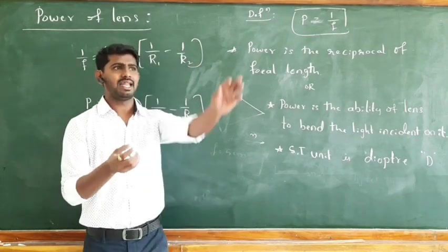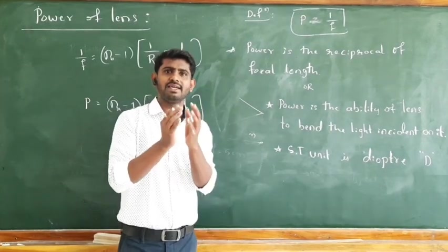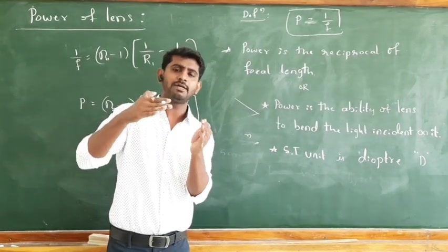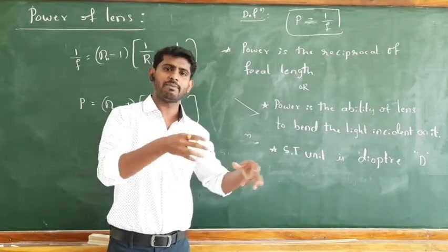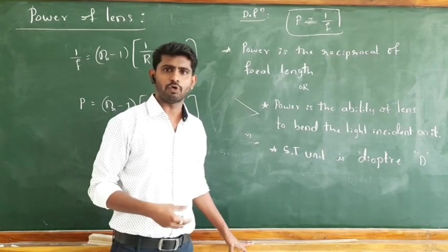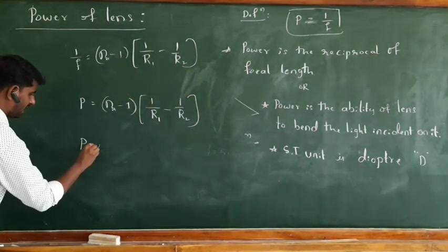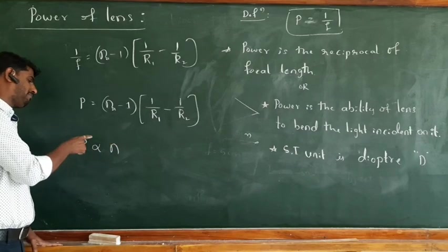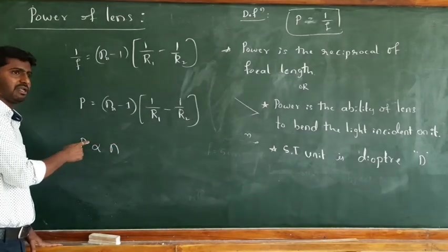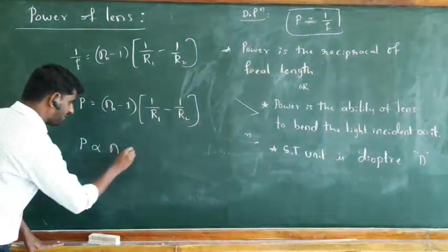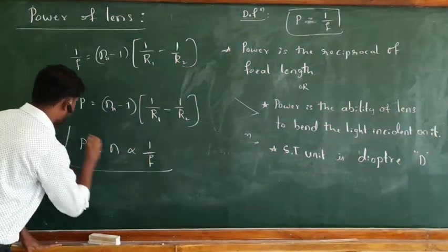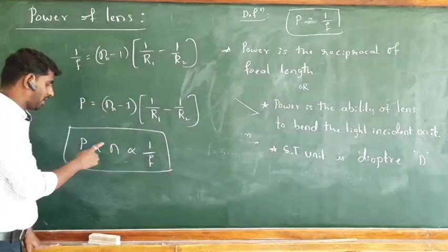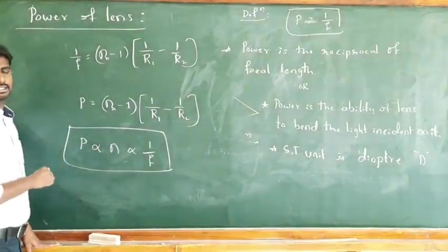Refractive index is a quantity related to the medium — it tells how much the medium is capable of bending light. If a lens is made of a material with higher refractive index, it can bend light more, so the power is more. Therefore, power is directly proportional to refractive index and inversely proportional to focal length.